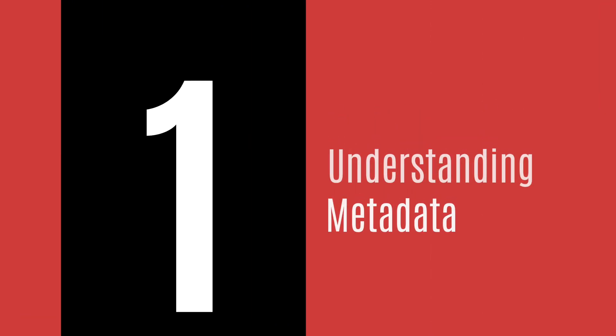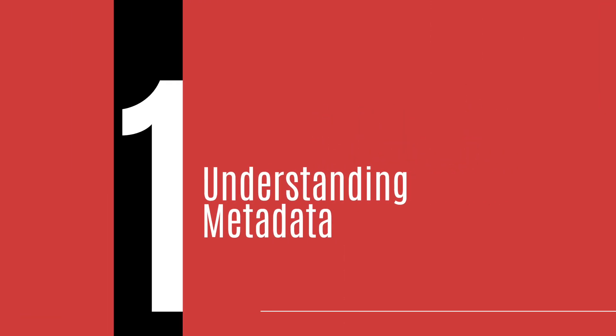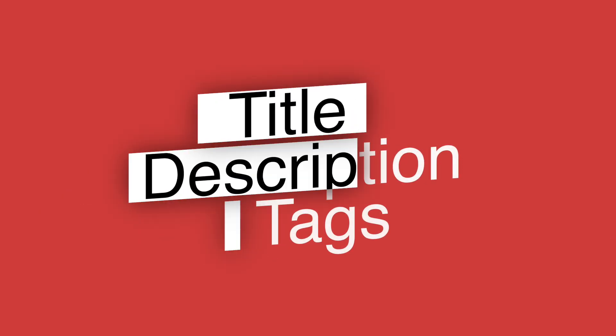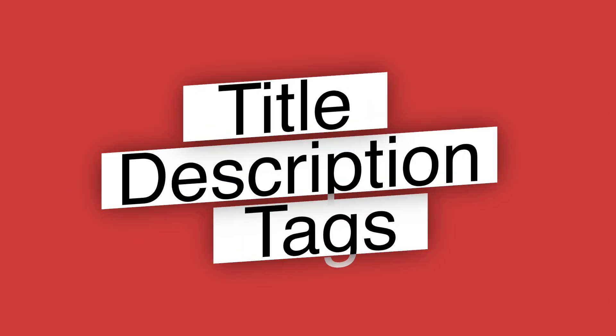Part 1: Understanding Metadata. Let's talk about metadata — the crucial information that helps YouTube understand your content. This includes your title, description, and tags. When optimized correctly, metadata can significantly boost your visibility through YouTube's search algorithm, which is especially valuable for newer channels.